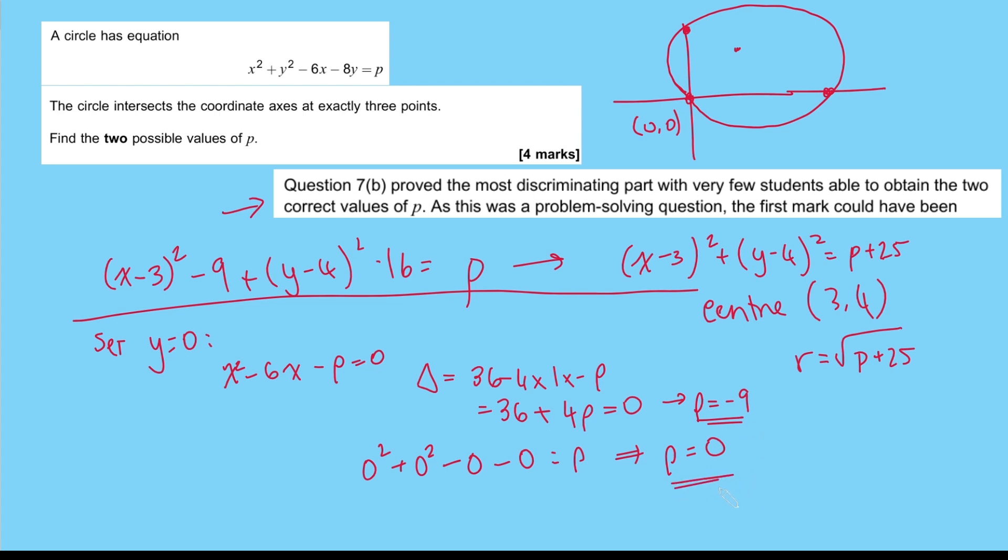And that is our other solution to this problem. So either p is -9 or p = 0. Those are our two solutions for this problem.